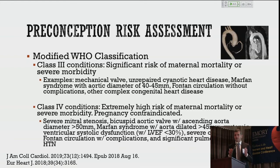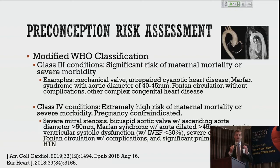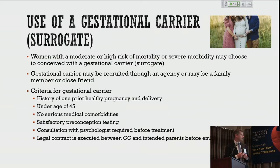Additional Class IV conditions include systemic left ventricular systolic dysfunction with an ejection fraction less than 30%, severe coarctation, Fontan circulation without complications, and severe pulmonary artery hypertension. These are patients for whom we recommend not conceiving. This is one of the very few times a gynecologist or reproductive endocrinologist will actually tell a woman pregnancy is contraindicated.